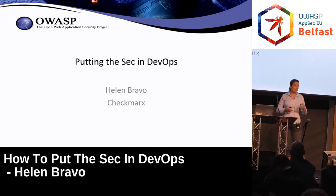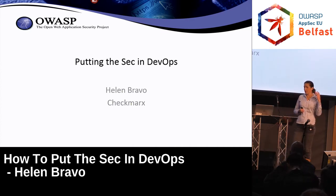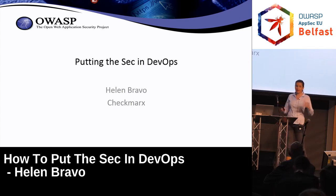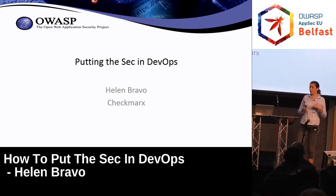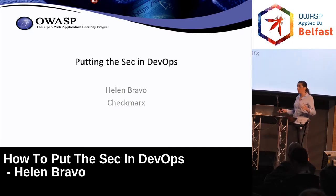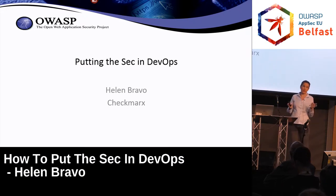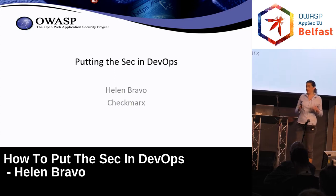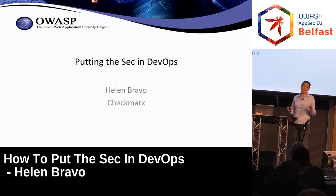Back then it was 'DevOps is here' and there are companies like Netflix and LinkedIn who are doing this cool thing and deploying a few times a day — that's called DevOps. We all envied them, but probably no one actually did that except them. Since then, four years passed and things changed.